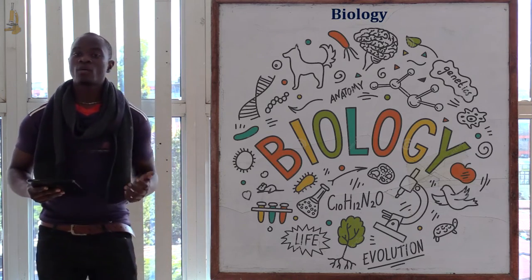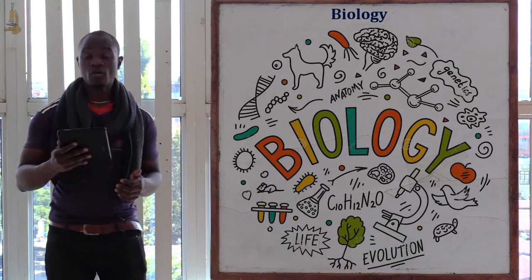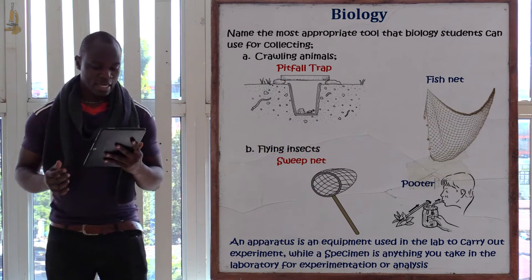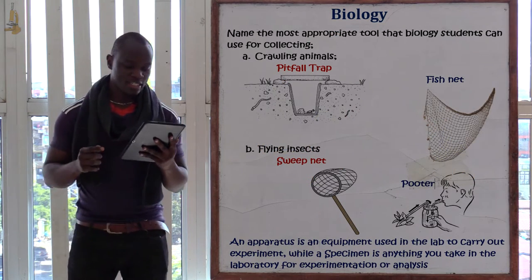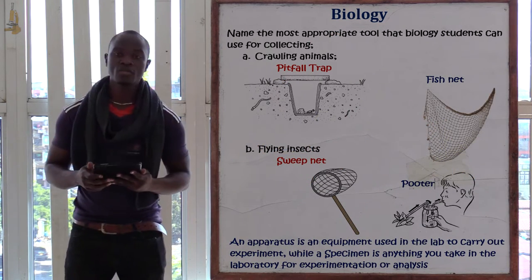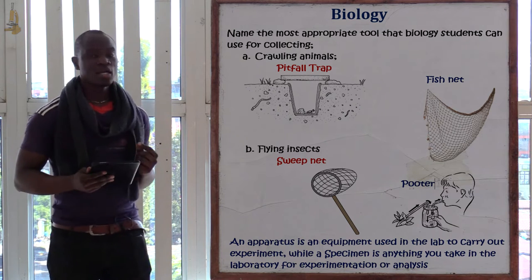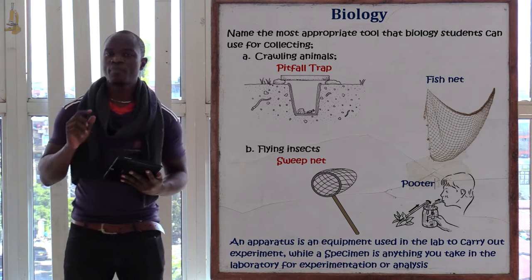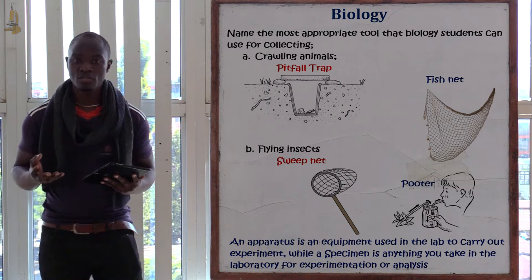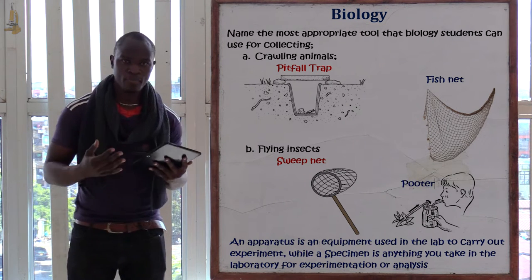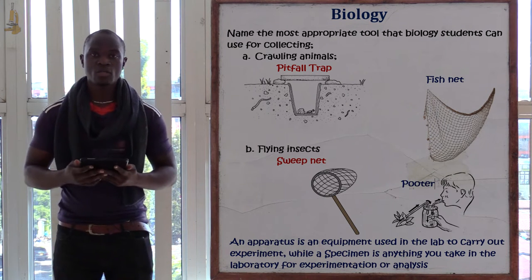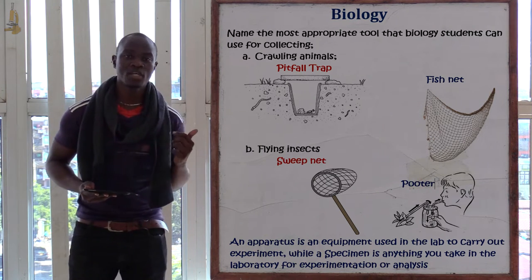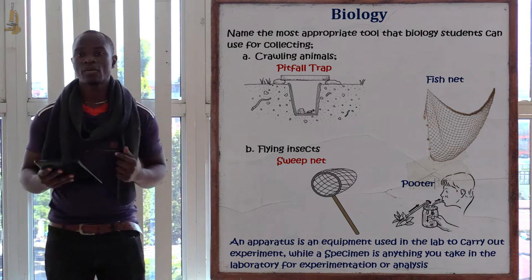Hello there and welcome. Now I want us to look at a biology paper for Form 2 and let's begin with the first question. The first question is asking us to name the most appropriate tool that biology students can use for the following collection. The first one is crawling animals — the apparatus used to trap crawling animals is always the pitfall trap.